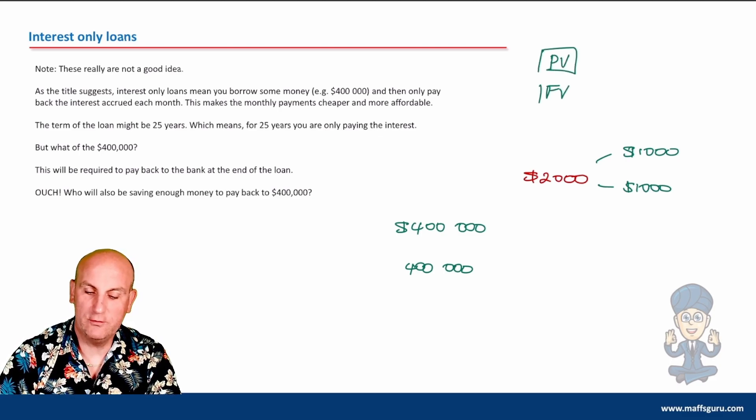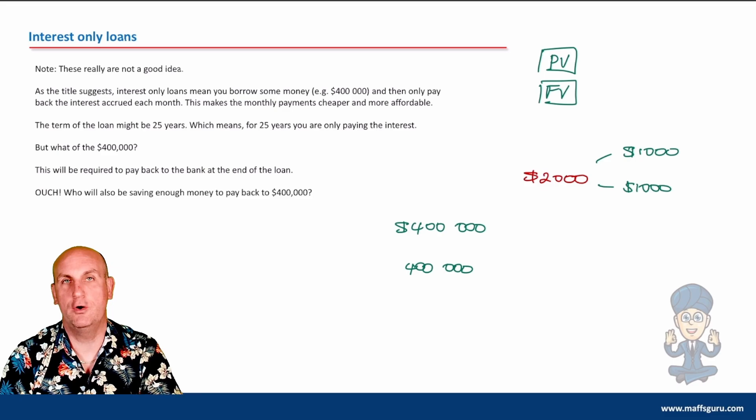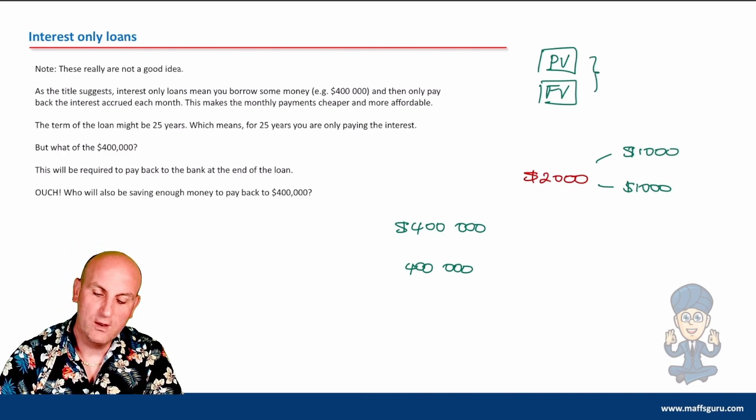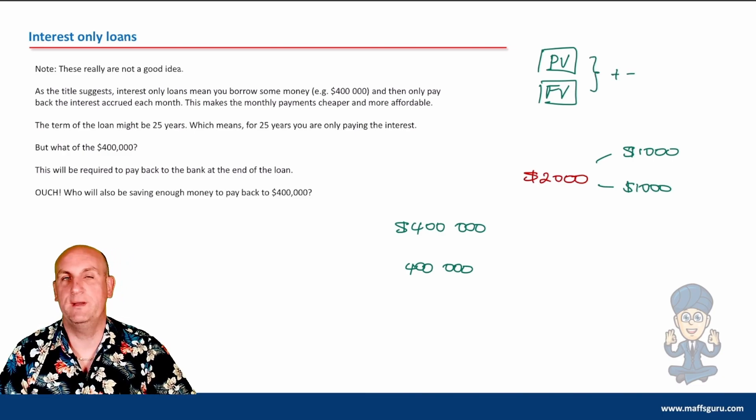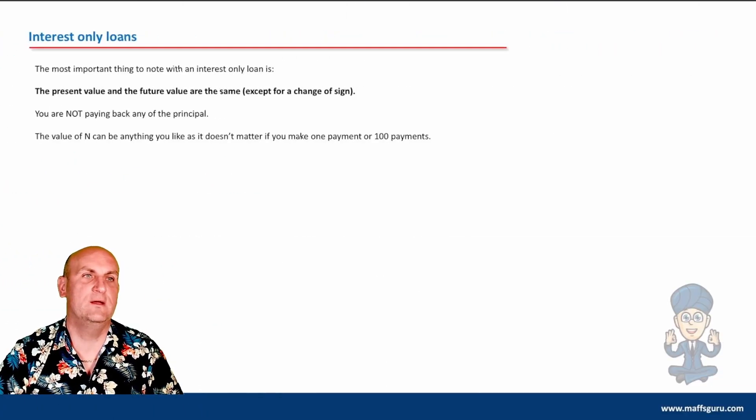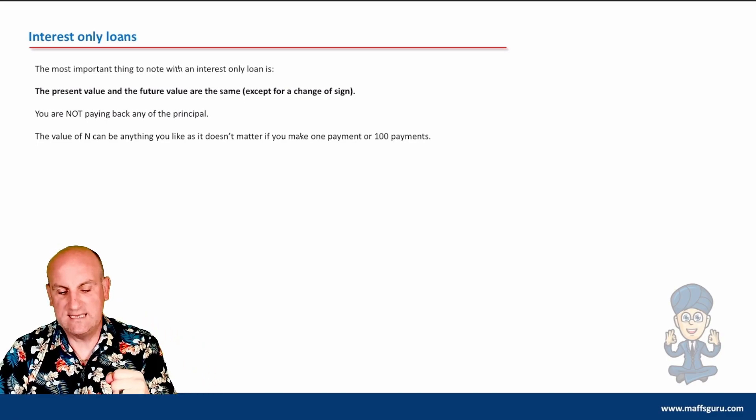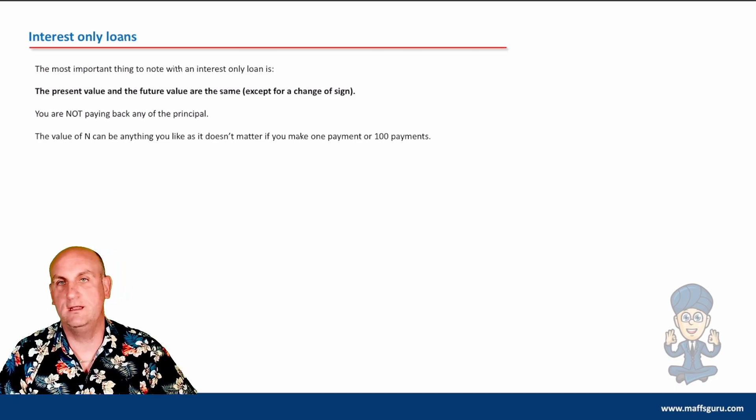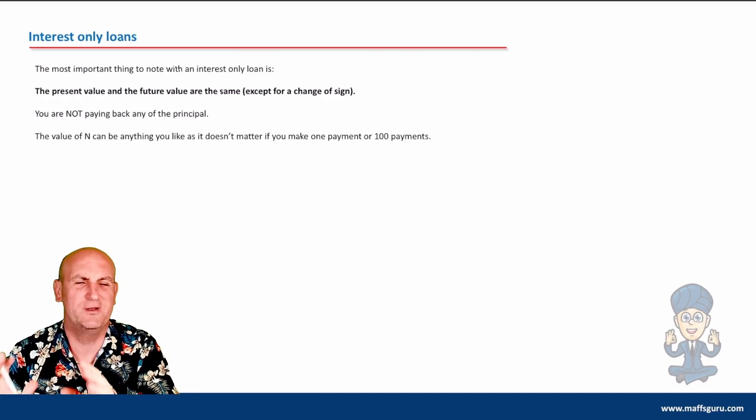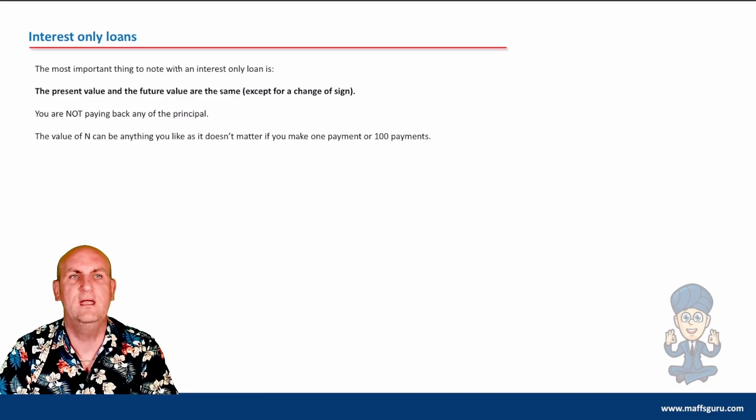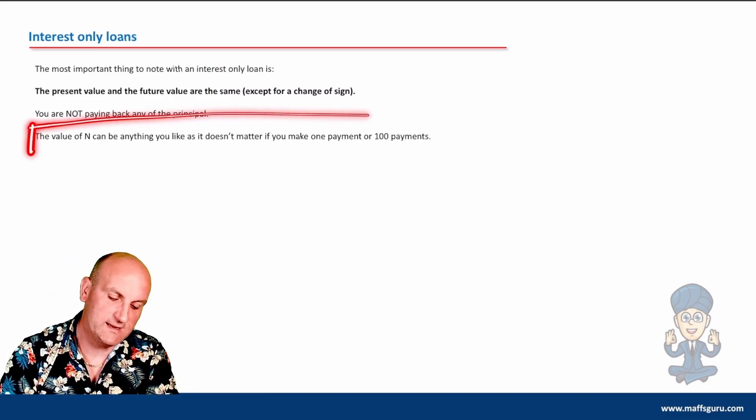An interest-only loan means that month on month we're only paying the interest. Your principal value and your final value on your CAS calculator do not change. You will still owe the same amount of money on day one as you will on day 30. The only thing different will be a plus or minus depending on the context.